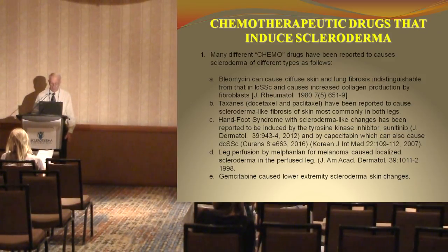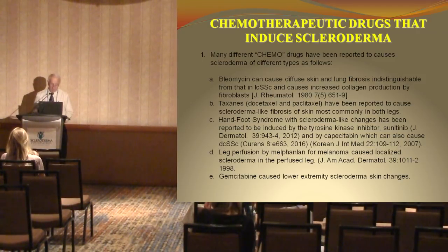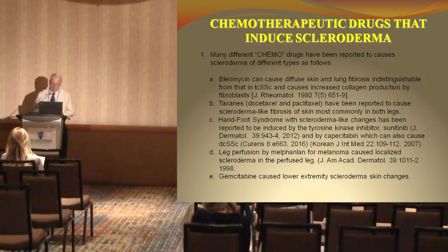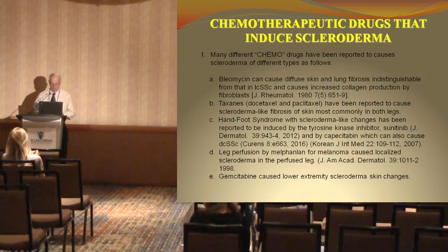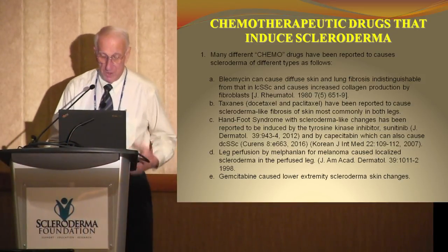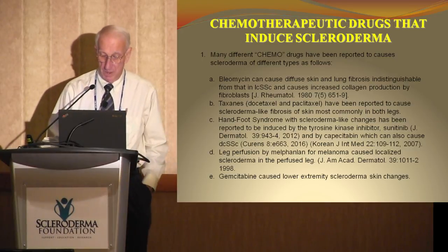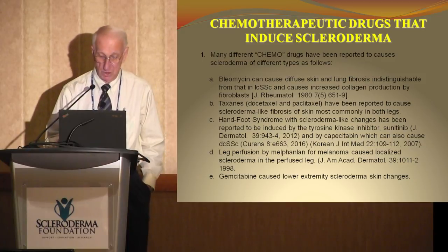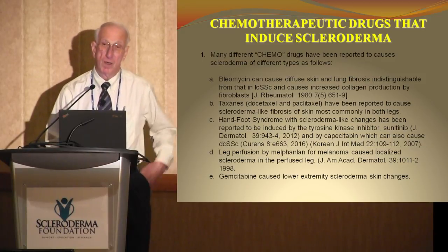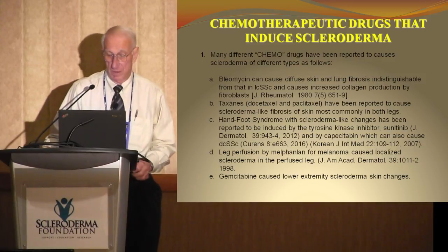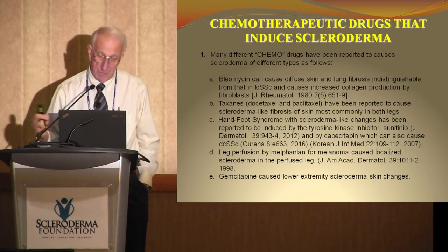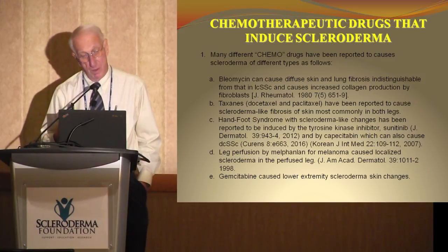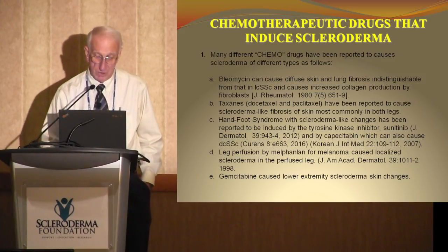There's also a report with capecitabine, which can also cause diffuse systemic sclerosis. Leg perfusion by melphalan for melanoma was reported to cause localized scleroderma-like changes in that extremity. And then another agent, gemcitabine, has caused lower extremity scleroderma skin changes also. So this is a class of drugs that several of which have been reported and are commonly used in patients who have cancer.